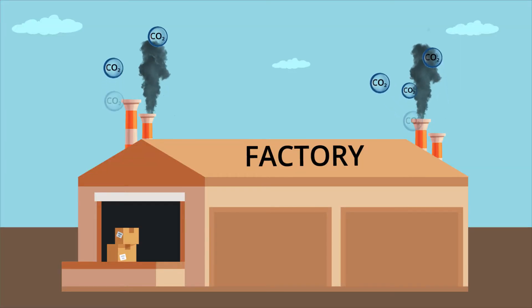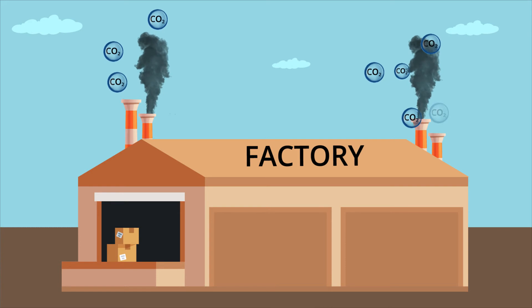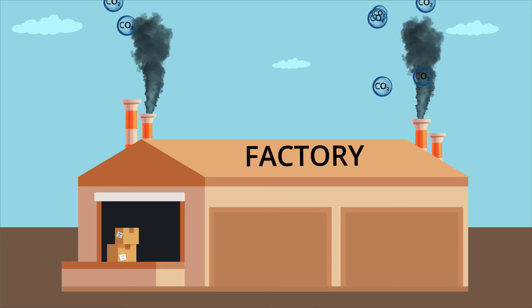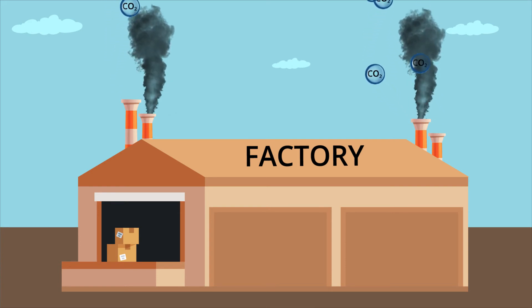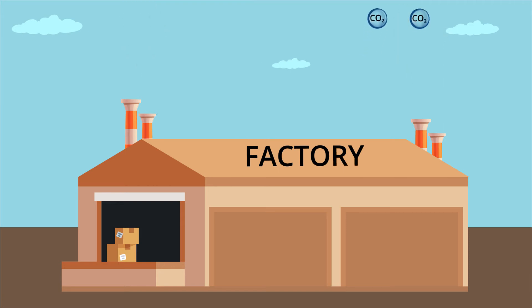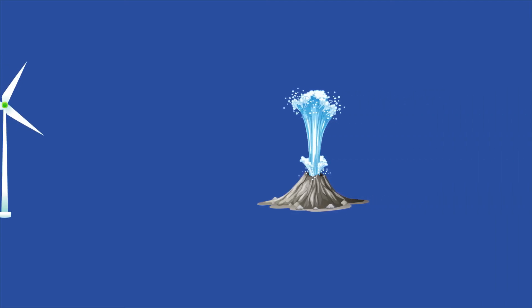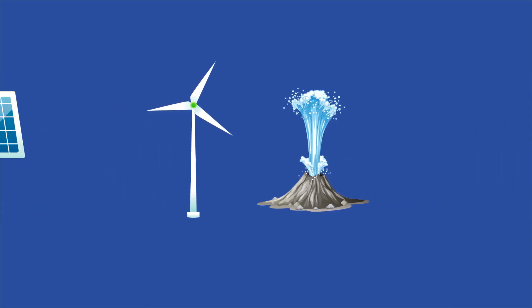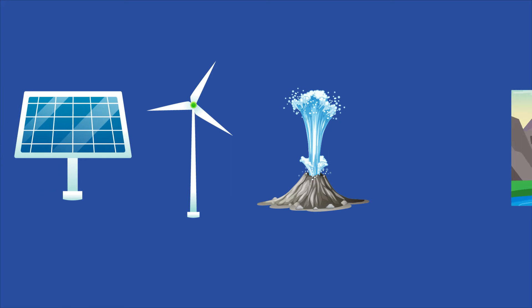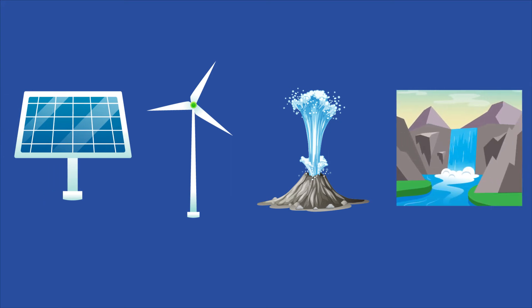Another strategy for reaching carbon neutrality is to reduce carbon emissions dramatically. While carbon offsets can help to balance the amount of carbon in the atmosphere, they're meant to be a secondary action, used only when a company or country cannot further reduce their carbon emissions.